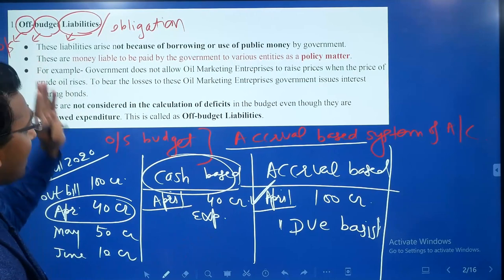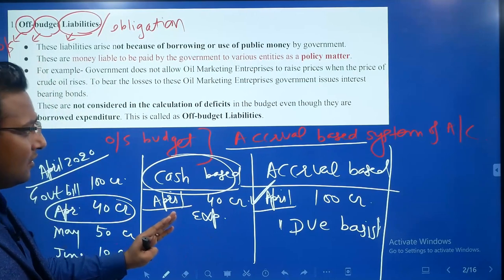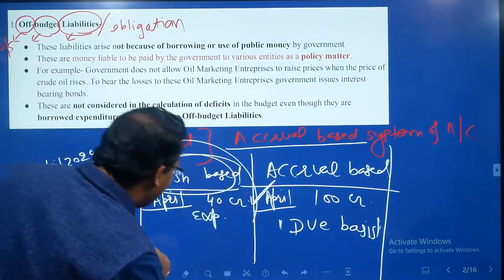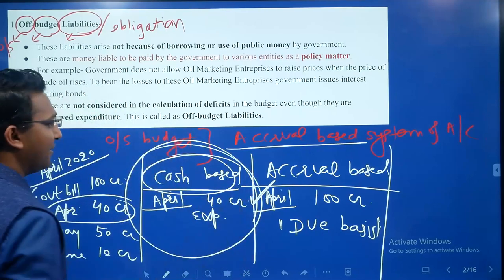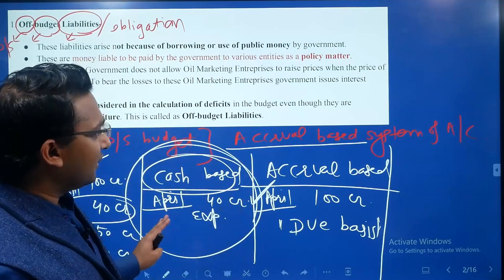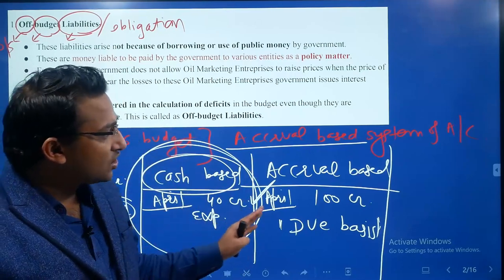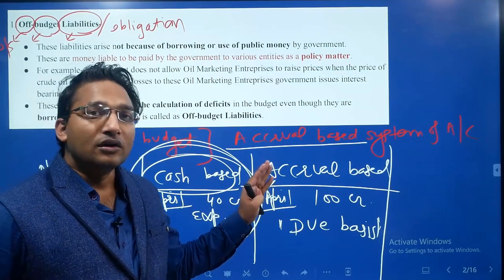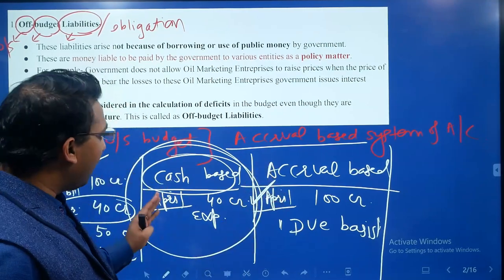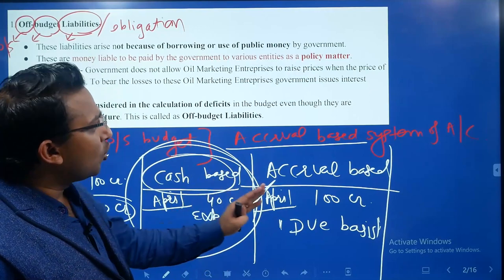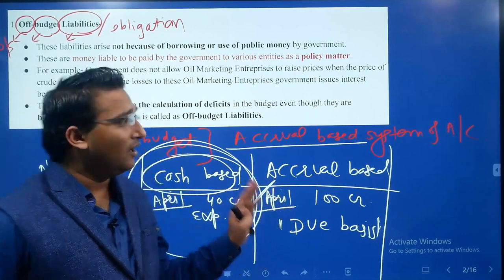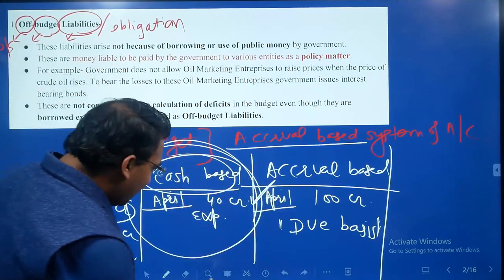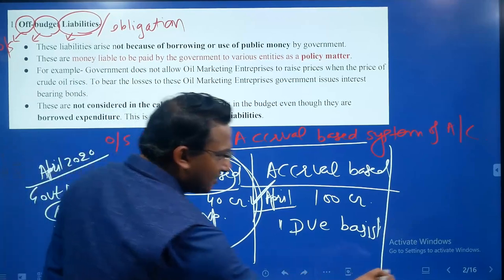Coming back to off-budget liabilities: they occur because our budget is prepared on a cash-based budgeting system. There are some obligations which are due but have not been paid, so those obligations may become part of the off-budget liability. Let us see an example of how this works.